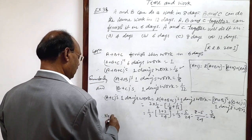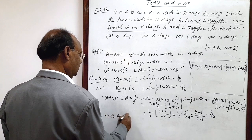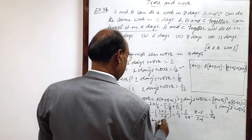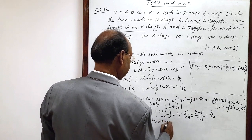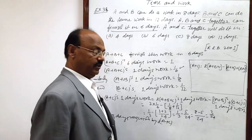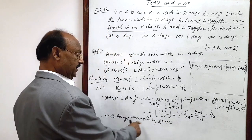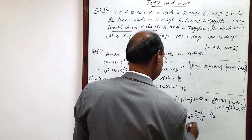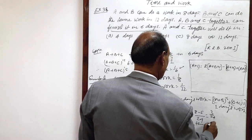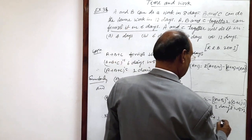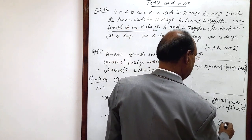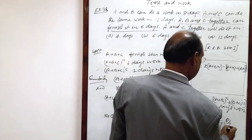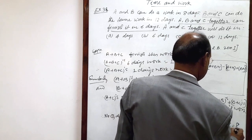number of days required by A plus C when A and C are working together to finish this job is equal to reciprocal of this, 1 divided by 24 by 3. This is equal to 24 by 3, and this is equal to 8 days.